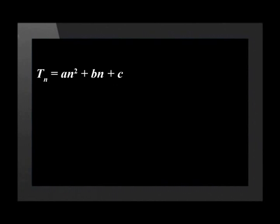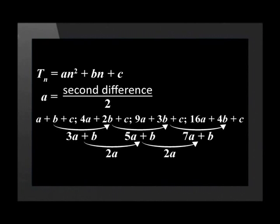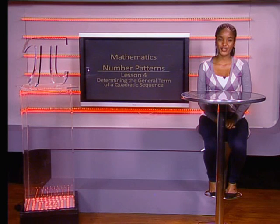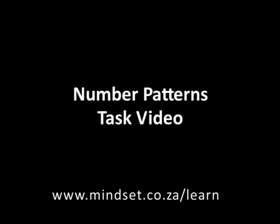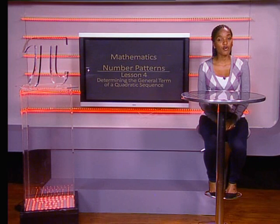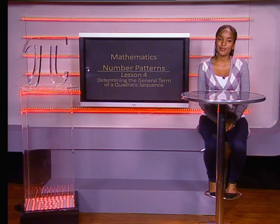Let's recap what you've learnt in this lesson. To find the value of A in the quadratic formula Tn equals An squared plus Bn plus C, we divide the second difference of the quadratic sequence by 2. To find the value of B, we use the fact that the first term of the first difference is equal to 3A plus B. And lastly, to find the value of C, once we have A and B, we use the fact that the first term of the quadratic sequence is equal to A plus B plus C. Thank you for joining us grade 11s. Remember to look at the tasks for this section in the number patterns task video, and you can learn more about number patterns on our website: www.mindset.co.za/learn.